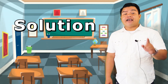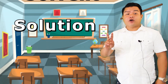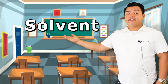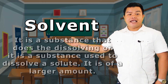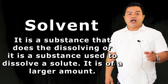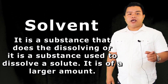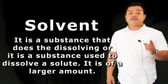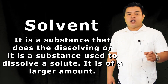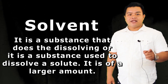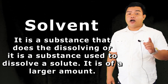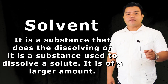A solution has two phases or parts. One is a solvent. It is a substance that is dissolving, or it is the substance used to dissolve a solute. It is of a larger amount.